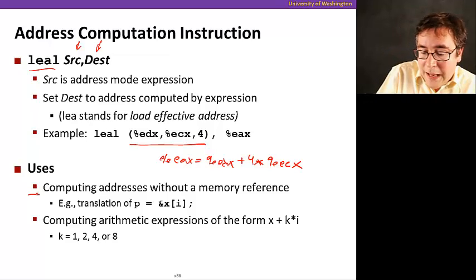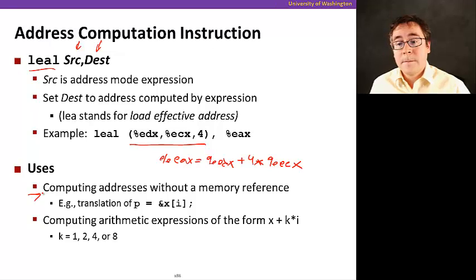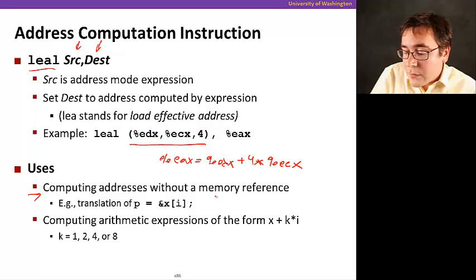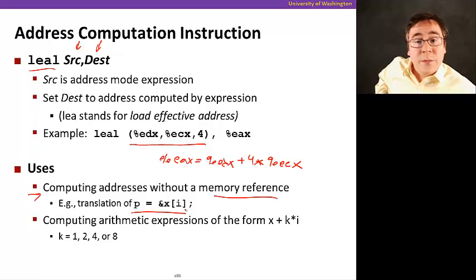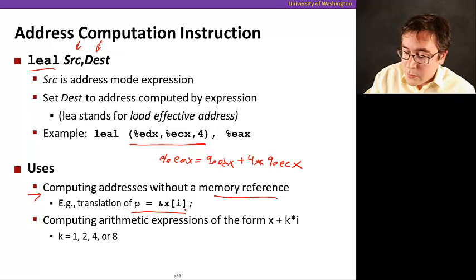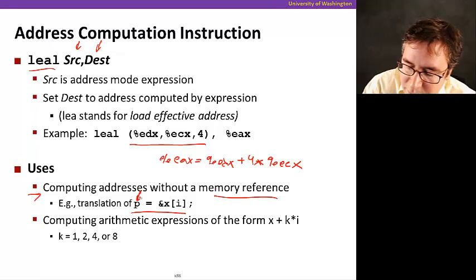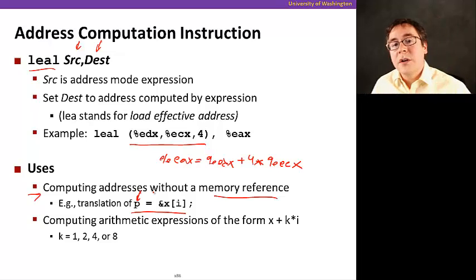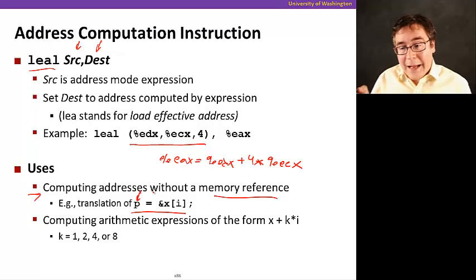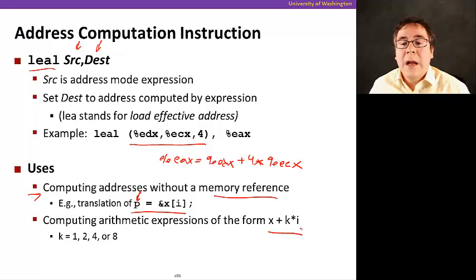So, and you can use that to actually compute addresses, to compute addresses without a memory reference. So, if you have this in your C code, Gaetano showed you this when he talked about pointers. What you want to do here, you want to get the address of the ith element of array X. Since you just want to get the address, you're not doing the memory access. So, in this case, you're going to be using this lea instruction. But, this instruction can actually be used to compute any expression of the form, any arithmetic expression of the form X plus K times I.